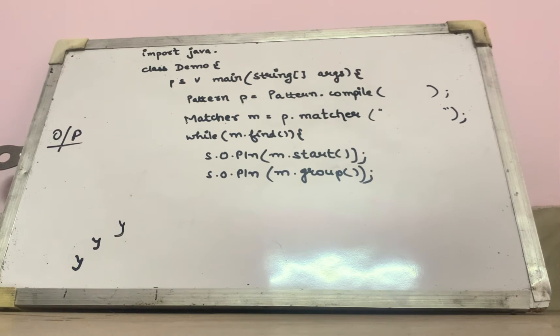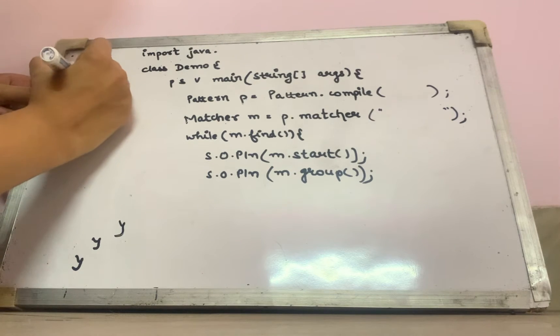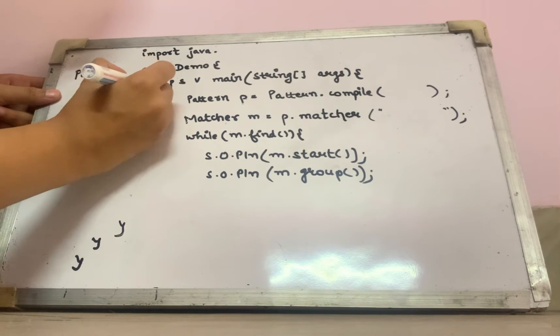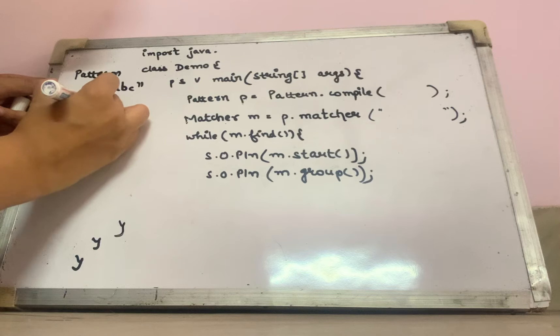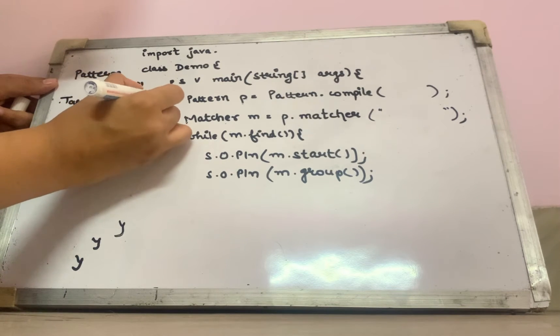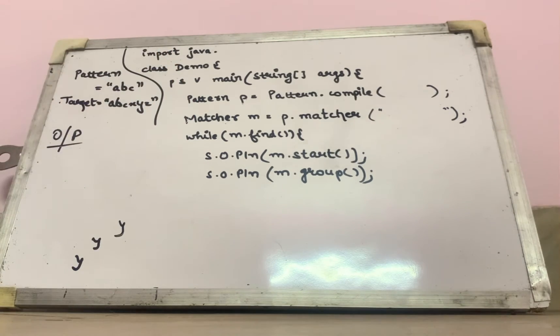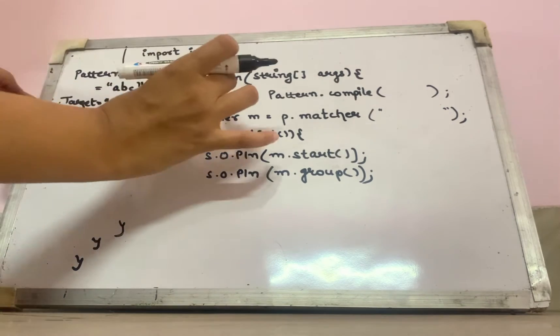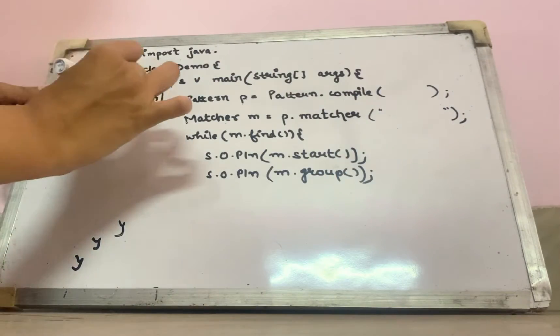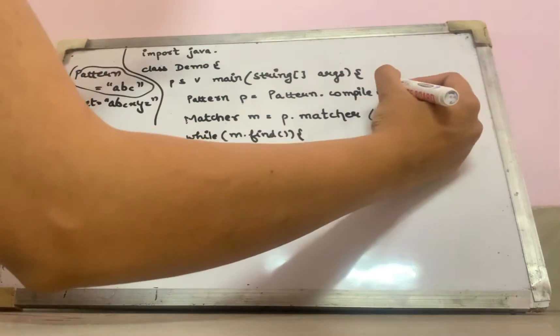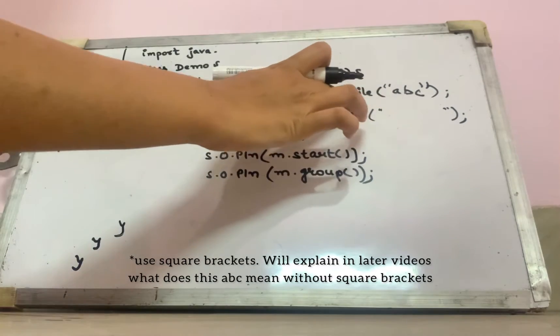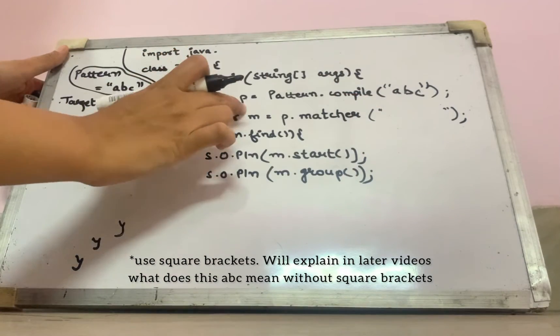So in last video we discussed about the pattern. Now suppose our pattern is, I have to find out a b c and my target is a b c x y z. This is my target. So this pattern dot compile brackets is going to contain what pattern? It will contain the pattern and this compile method is going to return the pattern class object.